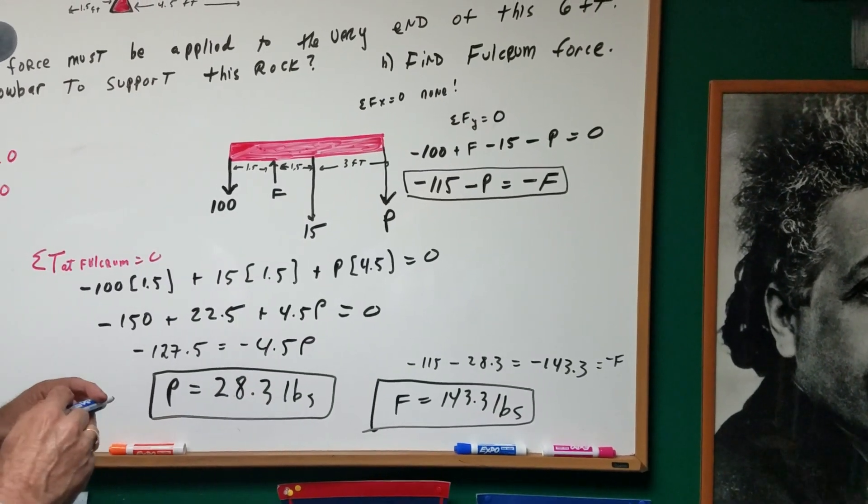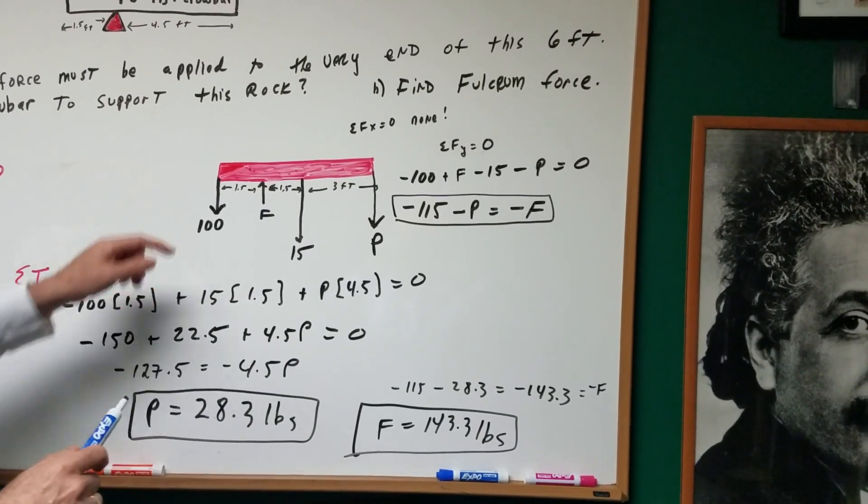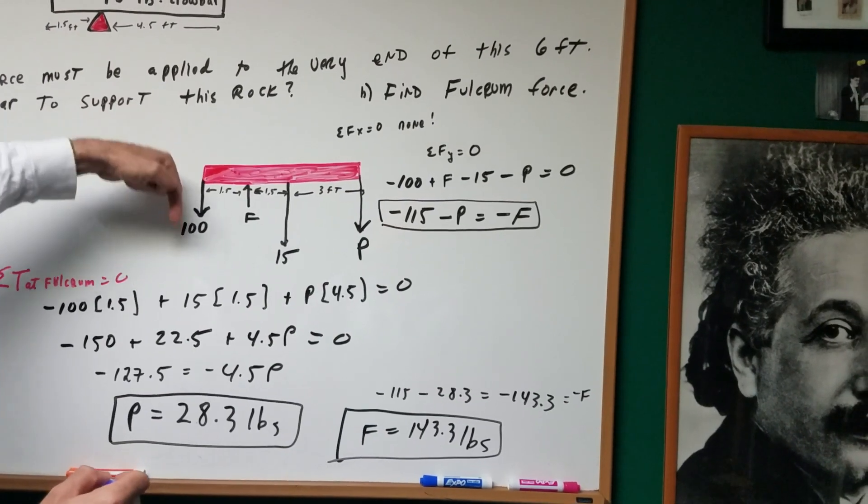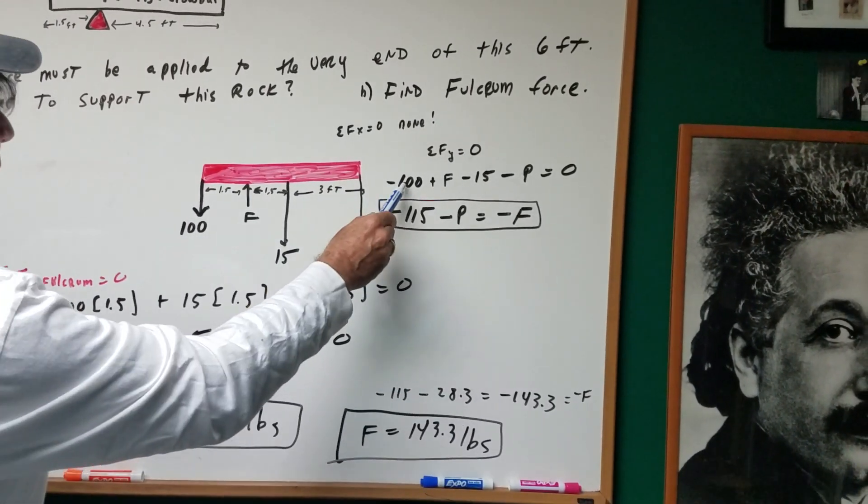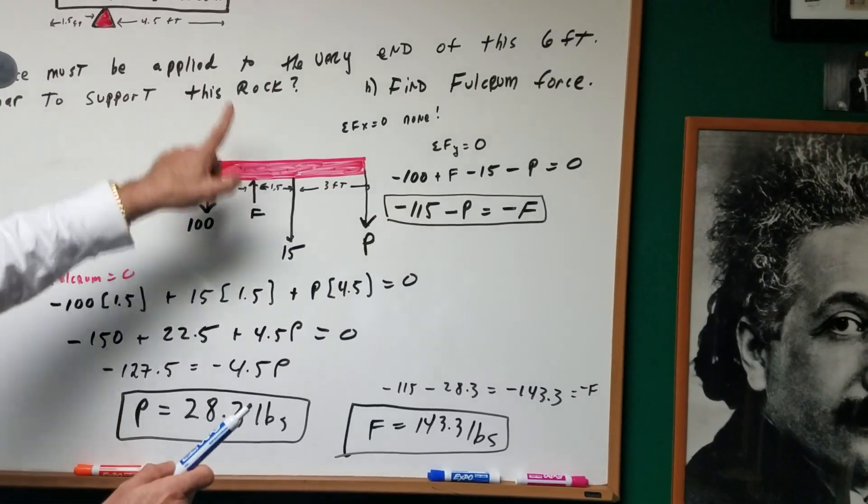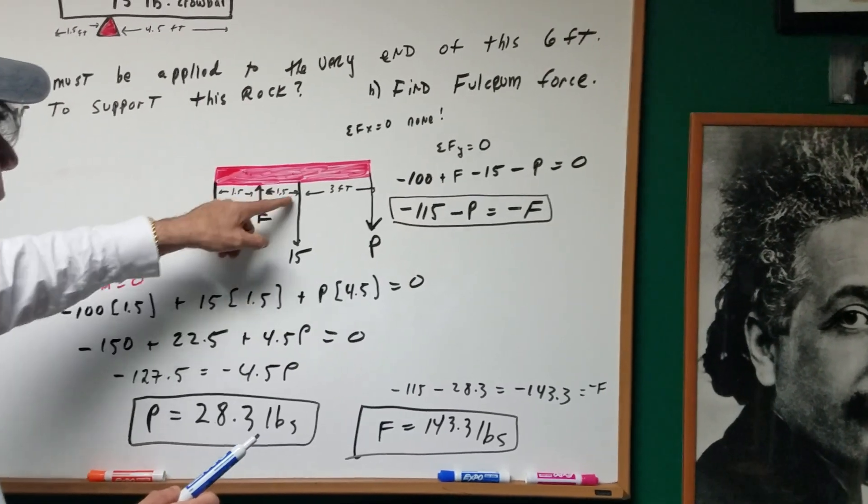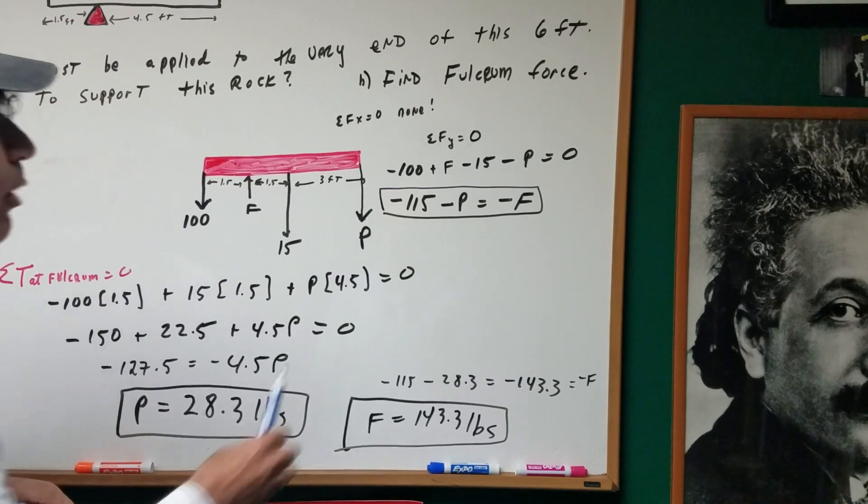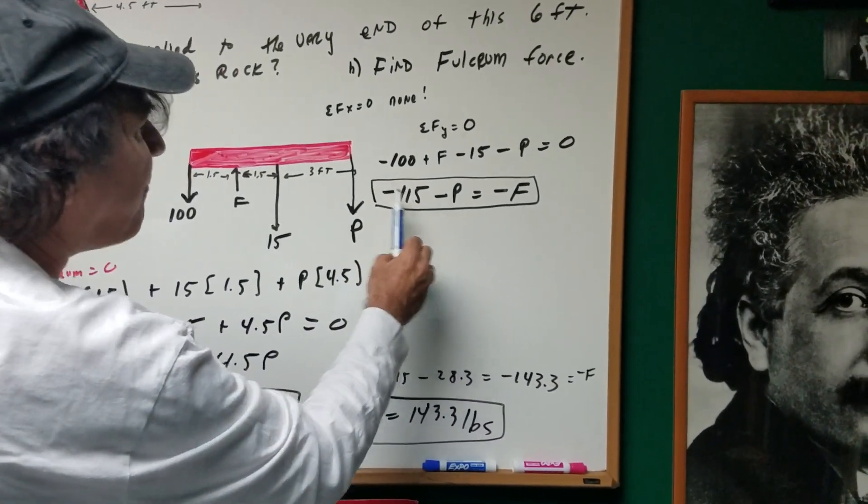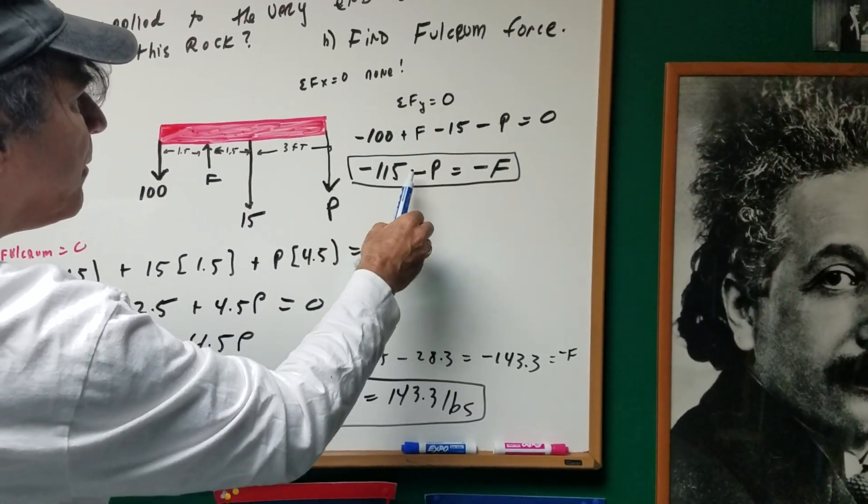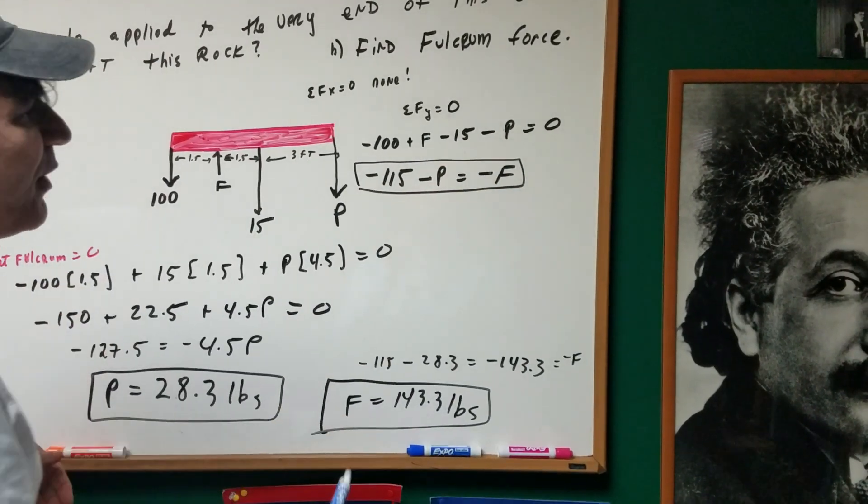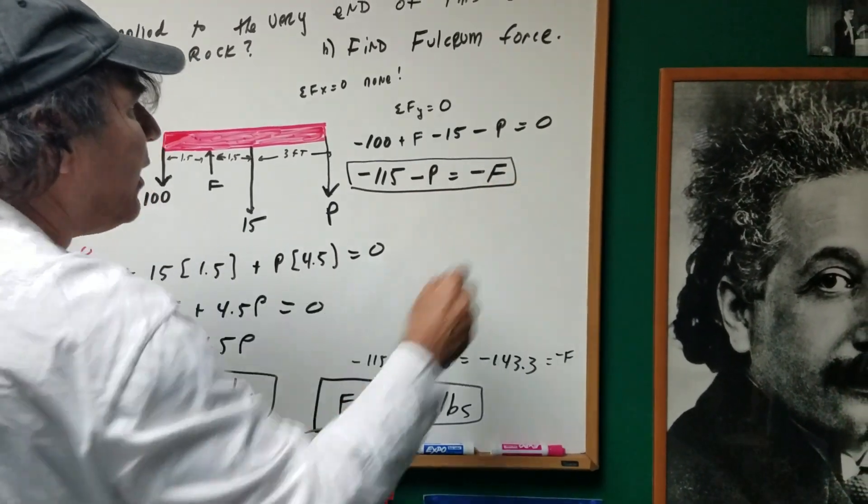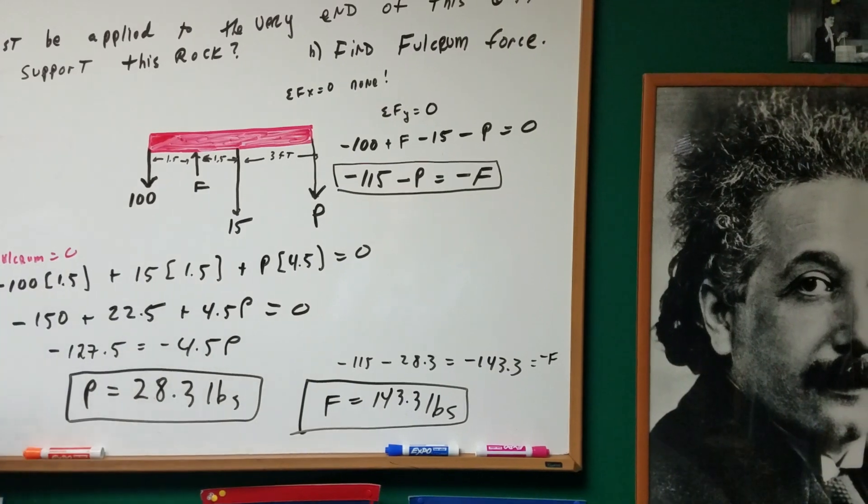The forces sum in the y direction equals 0. Well, what do you see? Down. Down is negative. Minus 100. Up for the force. Plus F. Minus 15. Minus P equals 0. Clean yourself up. You get minus 115 minus the P equals minus F. You could have rearranged it differently, but there's my first equation.